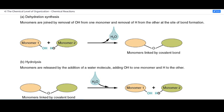the H2O comes out and we have two monomers linked together by a covalent bond, in this example, across the oxygen. That's a dehydration synthesis reaction.